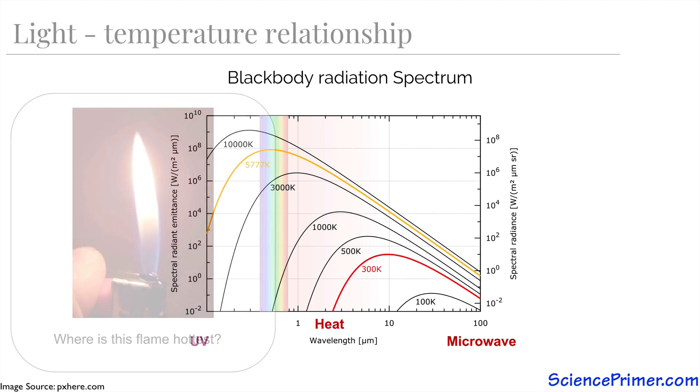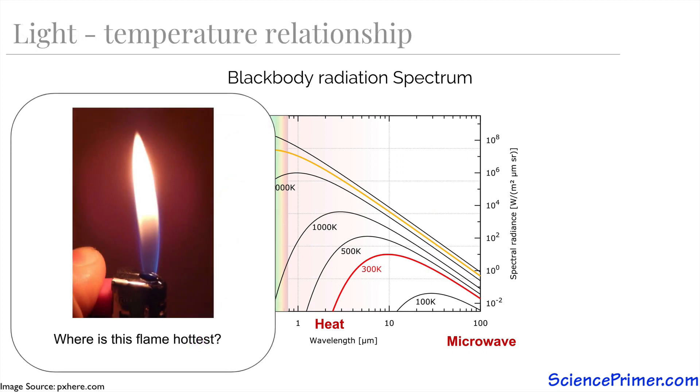Based on the information in this chart, we can ask questions like where is the flame from this lighter hottest? And be able to infer from the color that the blue region at the base of the flame is radiating the highest energy electromagnetic waves and therefore is the warmest part of the flame.